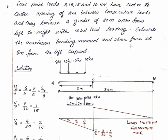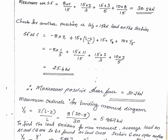Maximum negative shear force is active when most of the loads are on the left side. We place the 10 kN load at C. The maximum negative shear force uses the 10 kN load ordinate value, which is z by L.